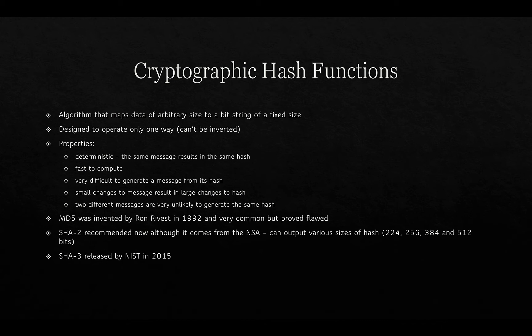MD5 was one of the first cryptographic hash functions, invented by Ron Rivest in 1992. It is very common but proved quite flawed, which matters because hashes are used for passwords. SHA-2 is the recommended standard now — though it does come from the NSA — and can output various sizes of hash from 224 bits up to 512 bits. SHA-3 was released by NIST in 2015.